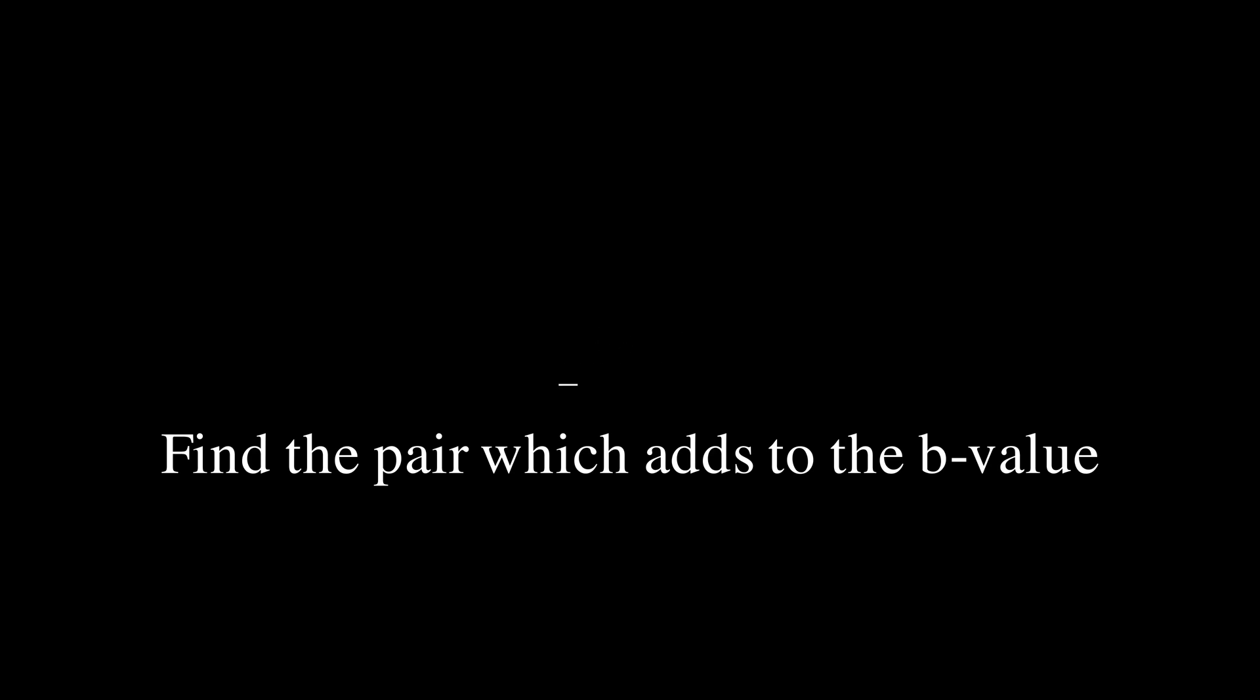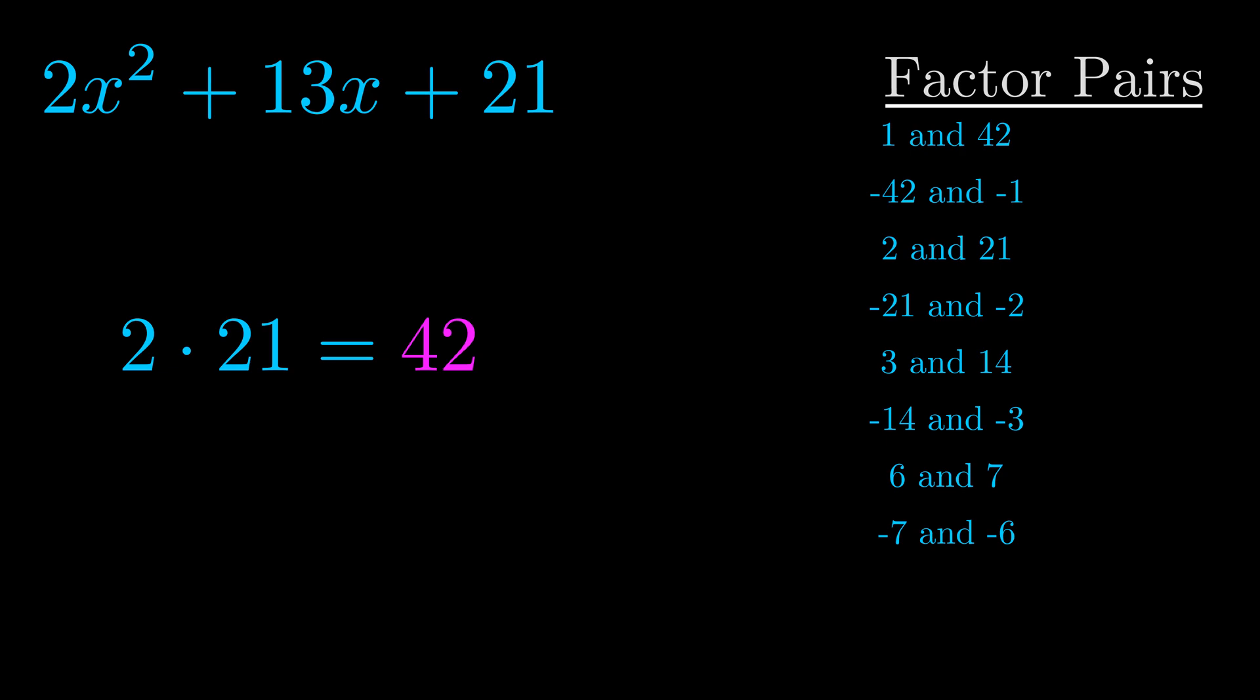The b value is the coefficient on the x term. That's the middle term, the one that we haven't done anything with yet. And really this is the only factor pair that we need.